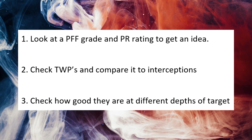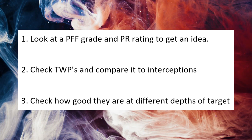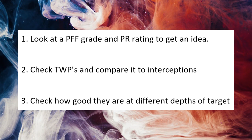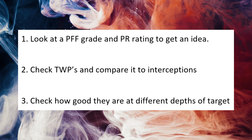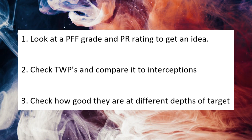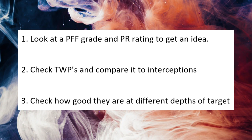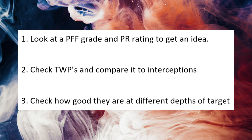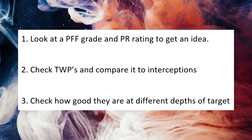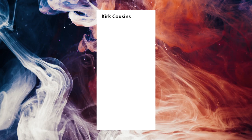Finally, check how good they are at different depths of target. This is very important because sometimes people are going to get a higher passer rating or higher EPA per play by throwing a lot of check downs that are working out. You want to make sure that when they're throwing the ball down the field, they're having success — over the middle, shallower down the field. Sometimes someone's passer rating can get inflated due to the fact that they're throwing a lot of short passes, but they're actually not scoring a ton of points. Let's use Kirk Cousins as the example.